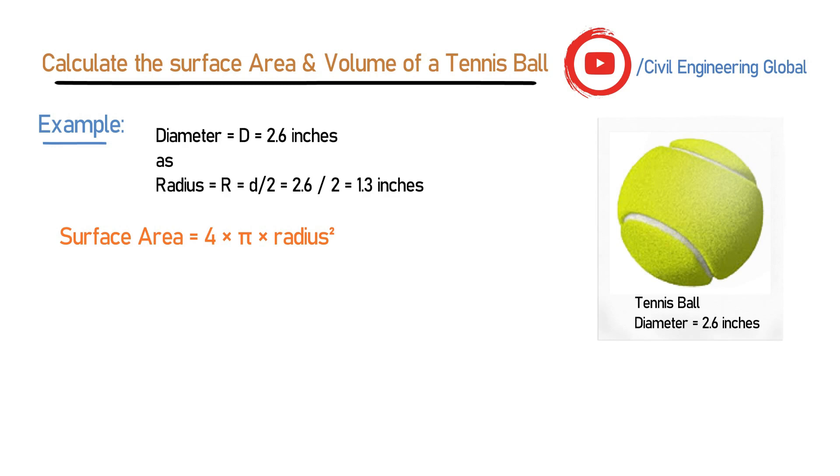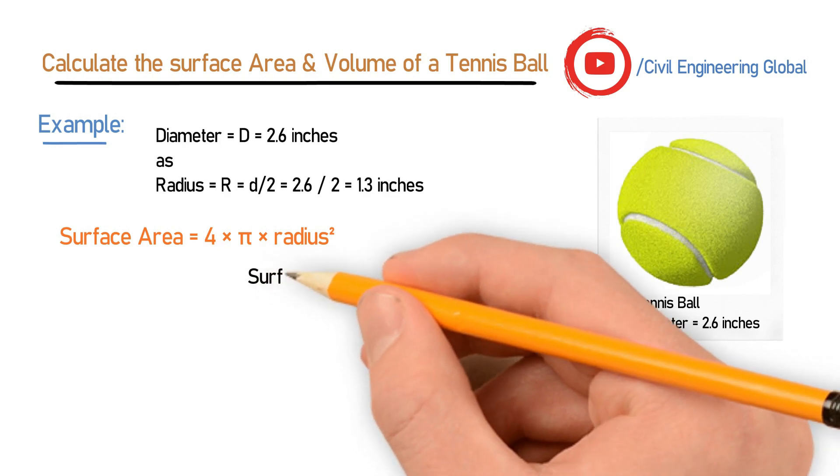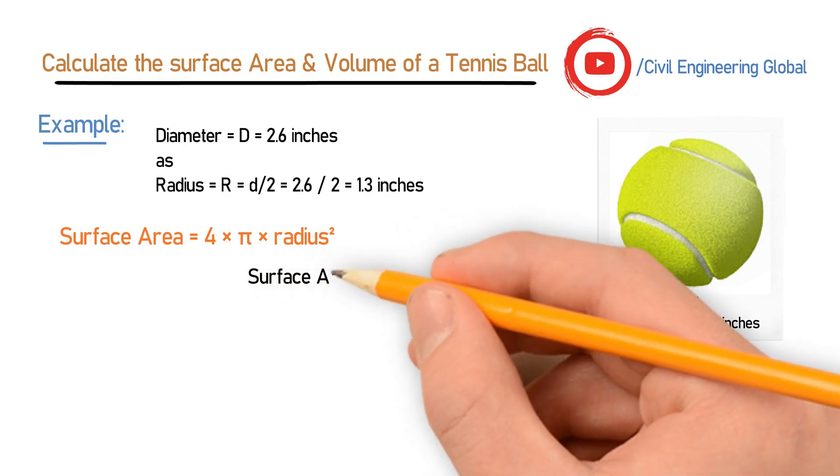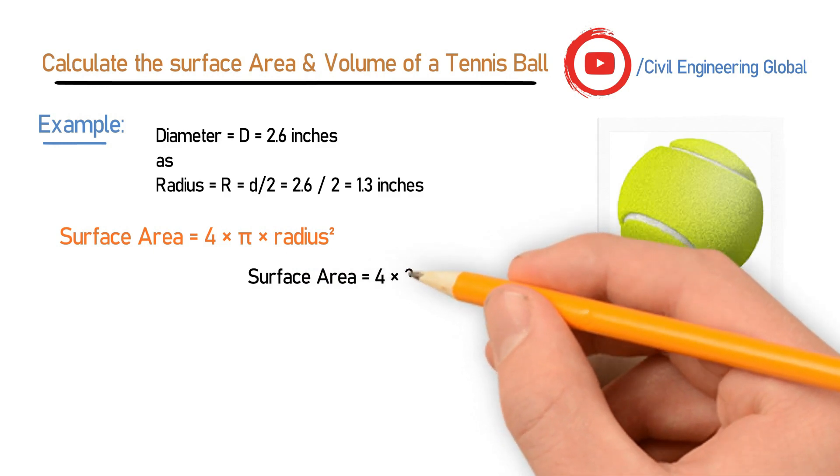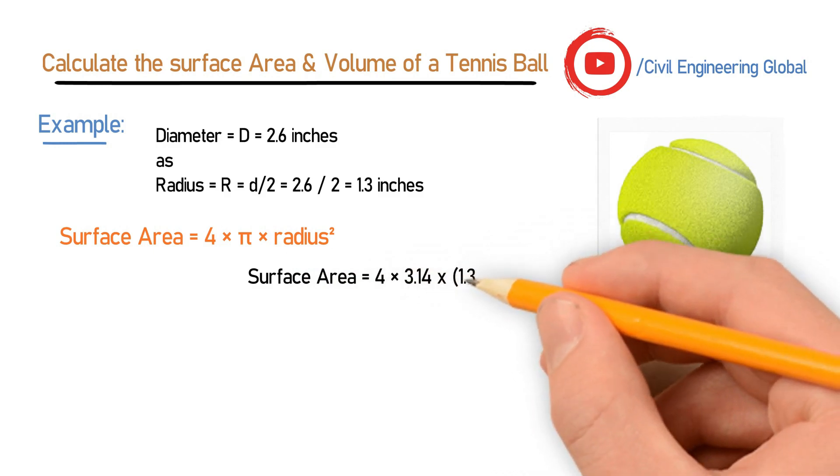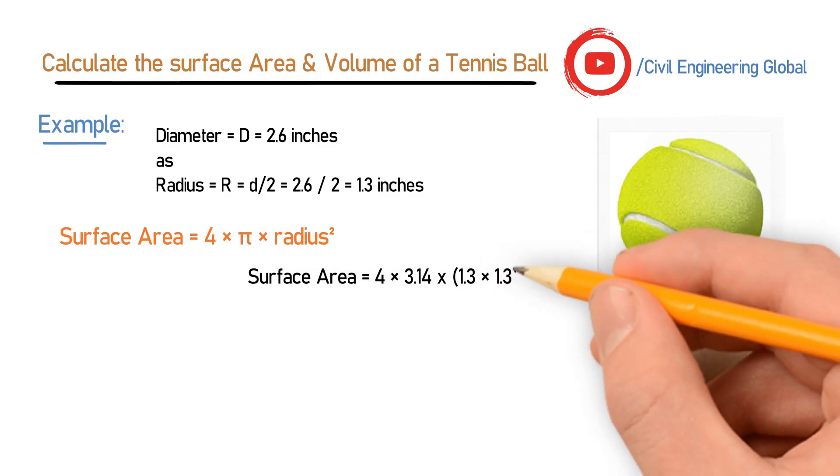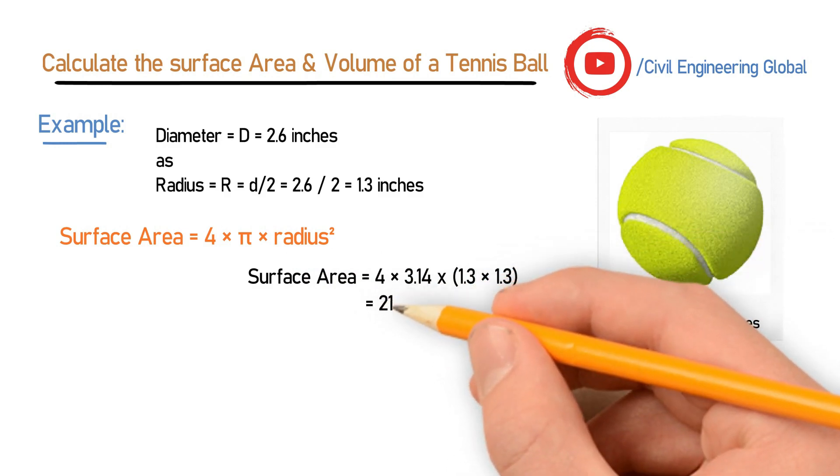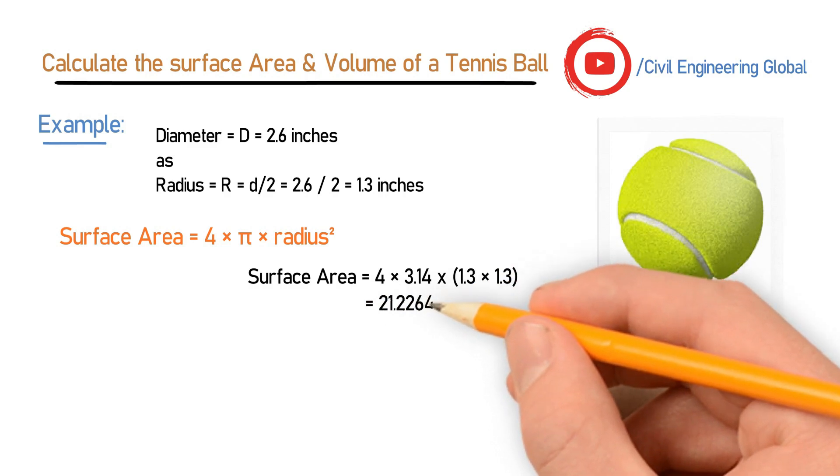Let's put the values. So this will become Surface Area = 4 × π × r². This equals 4 × 3.14 × (1.3)², which becomes 4 × 3.14 × 1.3 × 1.3.